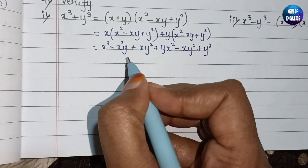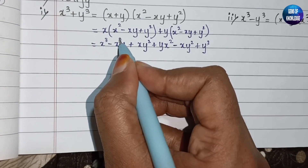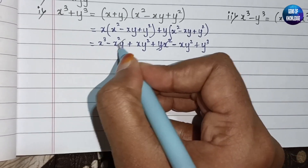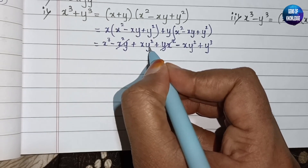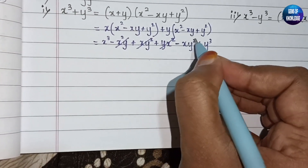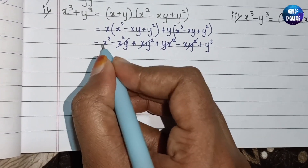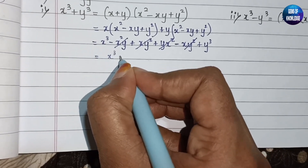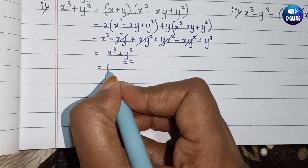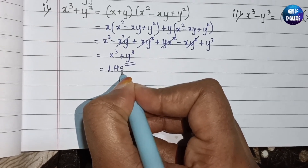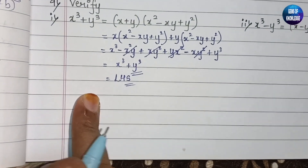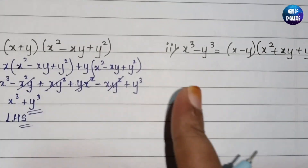Now you can see: x²y is negative and x²y is positive — both cancel. xy² is positive and xy² is negative — both cancel. What remains is x³ + y³, which is our left hand side. Hence this is verified.